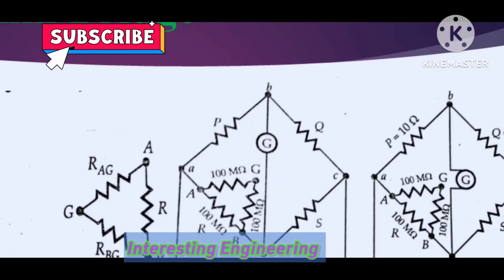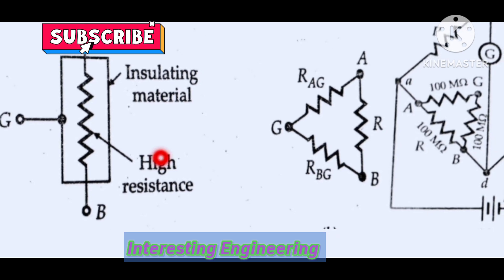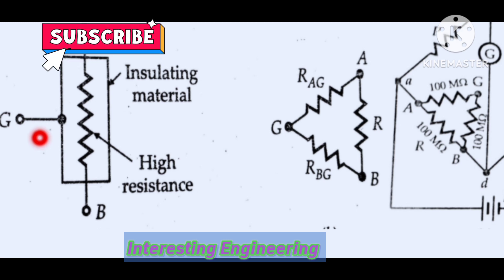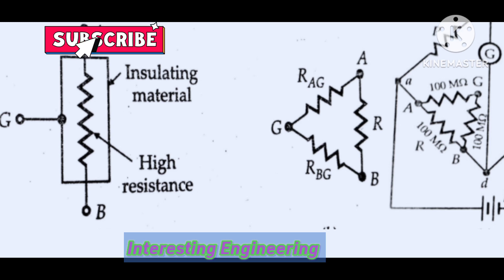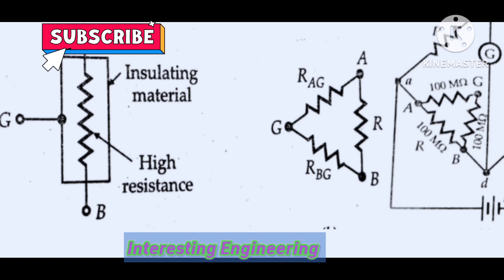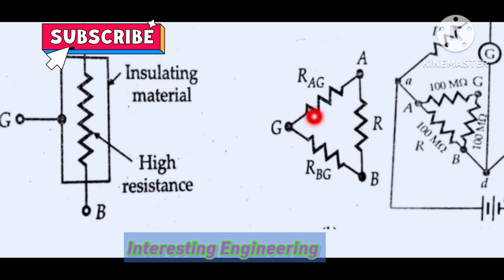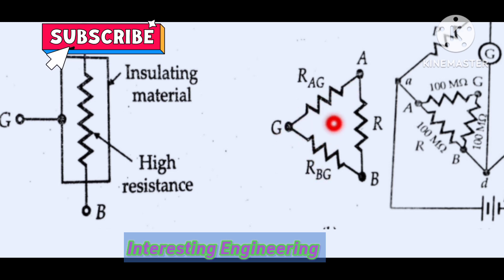This is the megohm bridge circuit. A resistance will have two terminals. A and B are the main terminals, and in the case of high resistance there will be one more terminal called the guard terminal. So a high resistance consists of three terminals: two main terminals and one guard terminal. When we connect a high resistance in a bridge circuit, if it has two terminals, we can easily connect it. Since it has three terminals, we need some modifications. This is the unknown resistance R — the high resistance we are going to measure — and it has a guard terminal with two more resistances RAG and RBG.